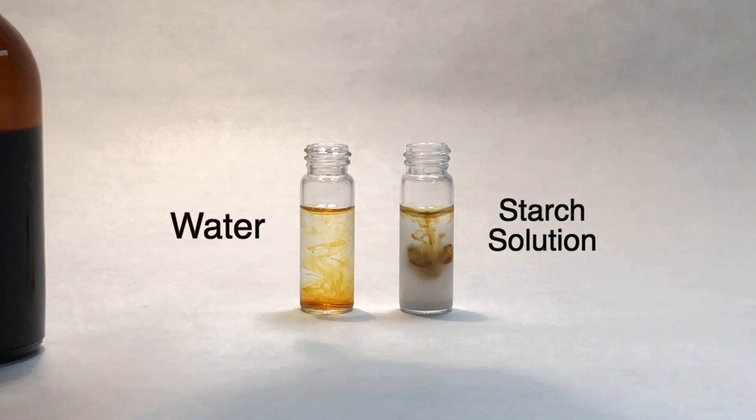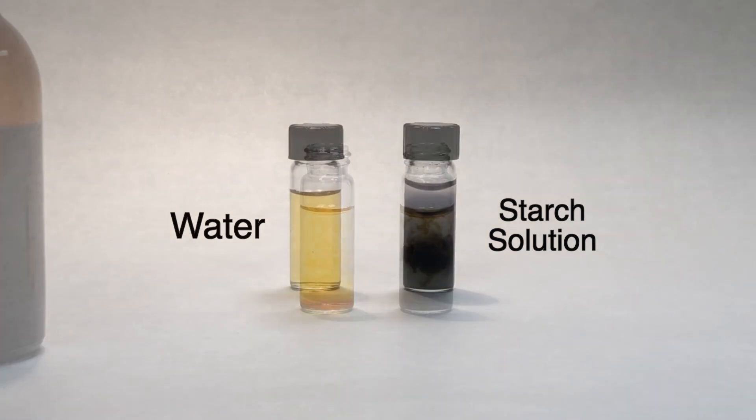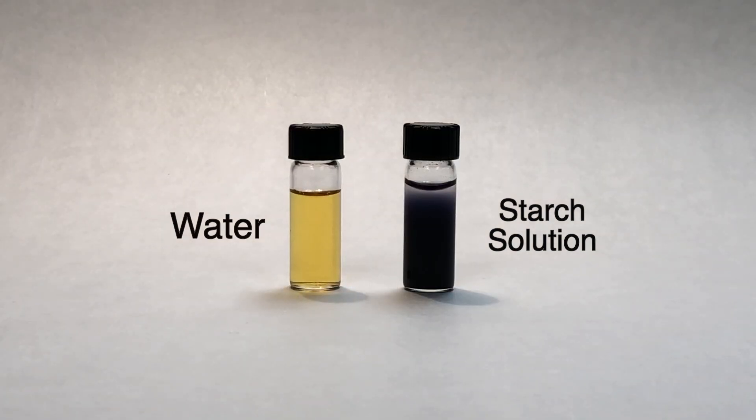When a single drop of the iodine test solution is added to each, the vial on the left turns a yellow-orange color, and the one containing starch turns a black-blue color.